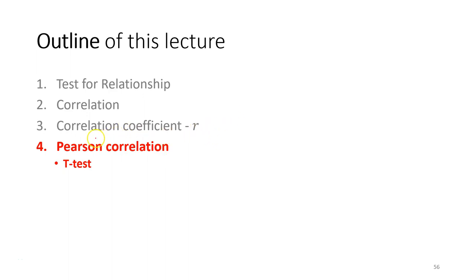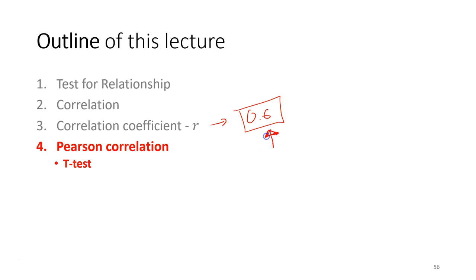After we calculate the correlation coefficient — in this case we obtain a value of 0.6 — regardless of whether the relationship is very strong or very weak, or the direction of the relationship, it's important to test if this relationship is statistically significant. We're going to use the Pearson correlation test, which is very similar to the t-test learned in the previous lecture.